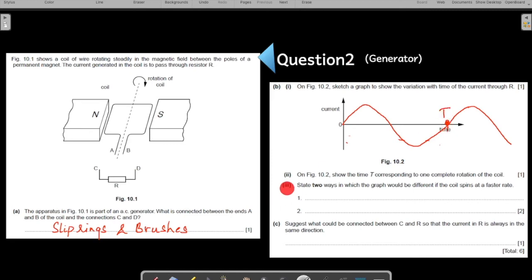Now the next question, the third part. State two ways in which the graph would differ if the coil spins at a faster rate. This coil that you see here, if it is spinning faster, what happens? Now this is also something that we have discussed in our video on AC generator. What happens if the spinning becomes faster? So it is a part of the IGCSE syllabus. What happens as a result?